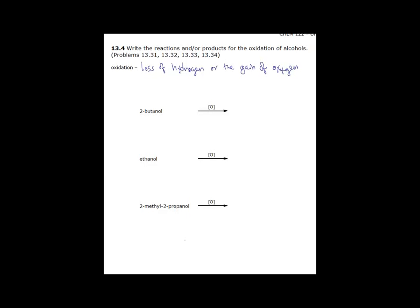So anytime you see an arrow with an O over it in brackets, this means oxidation. There are a variety of reagents that can be used to oxidize alcohols. A lot of them are chromium based. We'll use one in lab that is chromium based and you'll see a color change.